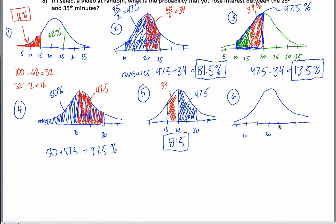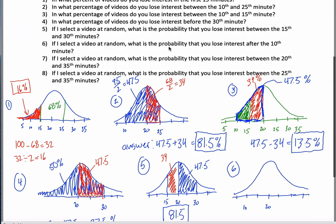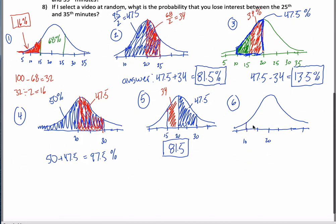I want after 10. Is that right? After the 10th minute. So here's the 10th minute right here. I want all this stuff over here. Man, that's a lot of stuff. But it's really similar to number four. Right? Before the 30th is going to be the exact same as after the 10th. Because 30 is two standard deviations above the mean. And 10 is two standard deviations below the mean. So below this amount is going to be the same as above this amount.